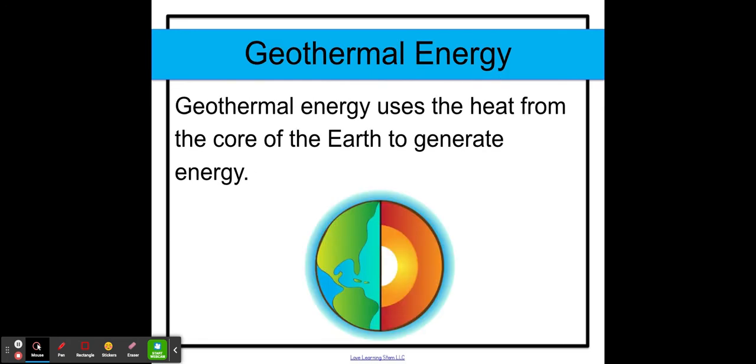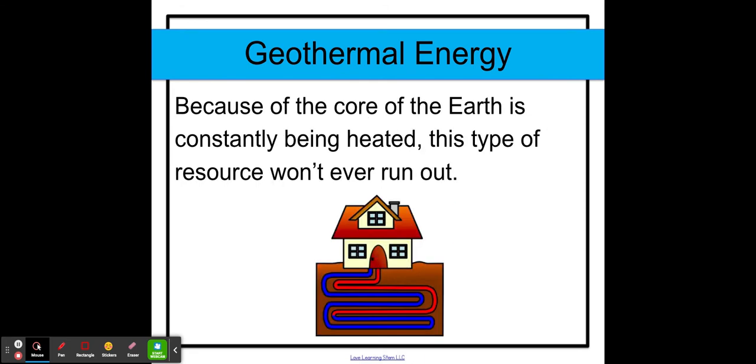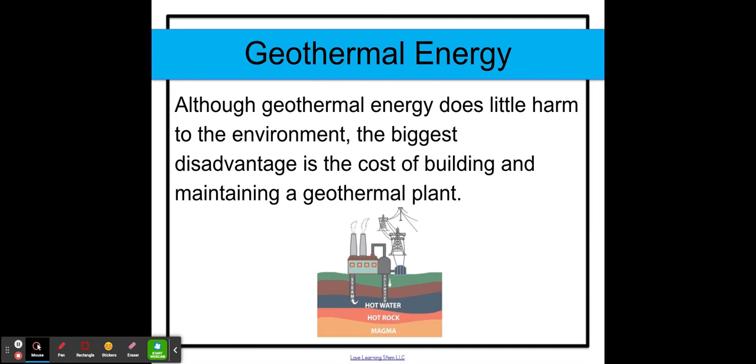Next, we're going to be going over geothermal energy. Geothermal energy uses the heat from the core of the earth to generate energy. Because the core of the earth is constantly being heated, this type of resource doesn't run out. Although geothermal energy does little harm to the environment, the biggest disadvantage is the cost of building and maintaining a geothermal plant.